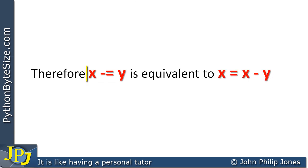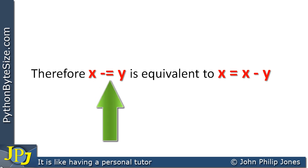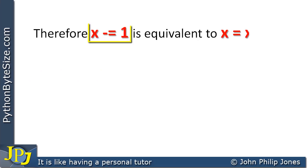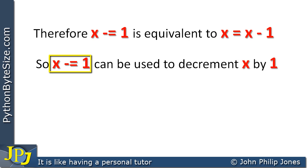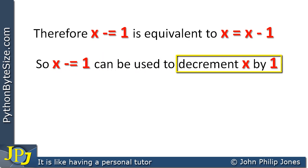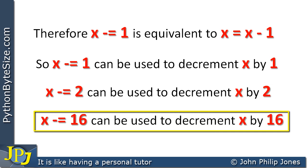Therefore X subtract-assign Y is equivalent to X assign X minus Y. This is read as: from X subtract Y, assign the result to X. Therefore X -= 1 is equivalent to X = X - 1. So X minus-assign 1 can be used to decrement X by 1, X subtract-assign 2 can be used to decrement X by 2, and this last one can be used to decrement X by 16.